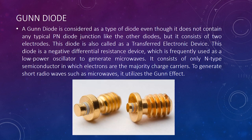Next is the Gunn diode. A Gunn diode is considered a type of diode even though it does not contain any typical PN diode junction like the other diodes, but it consists of two electrodes. This diode is also called a transferred electronic device. It is a negative differential resistance device frequently used as a low power oscillator to generate microwaves. It consists of only N-type semiconductor and utilizes the Gunn effect. Below we can also see a Gunn diode figure.